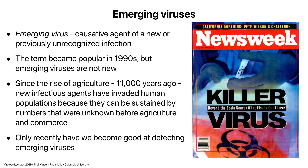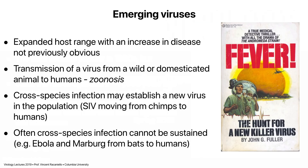Part of the reason we only see them now is we got very good at detecting them. The first recognized emerging virus infection was in the late 1960s — Lassa virus — where all of a sudden this new infection appeared in Africa. That would have been an emerging virus, but the term wasn't in use back then. There's a great book called the Lassa virus story: the hunt for a new killer virus.